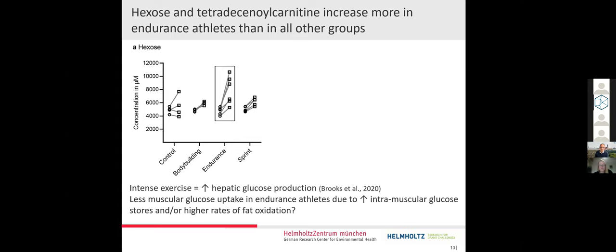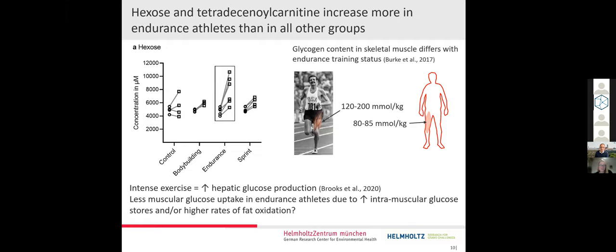Hexose mainly comprises glucose in this assay, and moderate to intense exercise - glucose that is stored in glycogen in the body is the main fuel during moderate to intense exercise. Therefore, the liver has to produce more glucose in order to sustain the muscles with energy. We now see that endurance athletes have more glucose in their blood compared to the others. This could mean that they take up less glucose in their muscles.